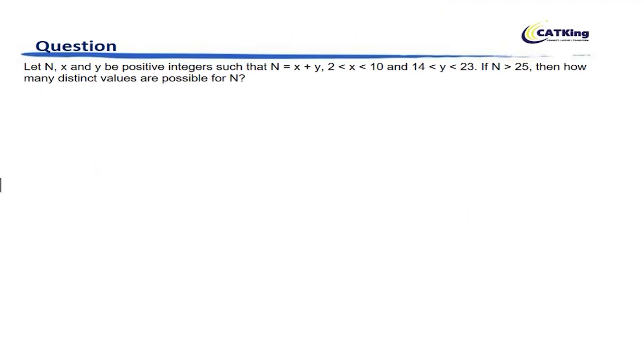Alright, now here you can see that N, X, Y are positive integers such that N is equal to X plus Y. X ranges from greater than 2 and less than or equal to 9, so basically X is greater than or equal to 3 and less than or equal to 9. Similarly, Y is greater than or equal to 15 and less than or equal to 22.